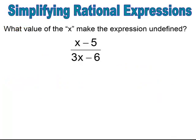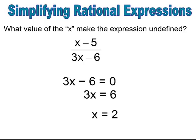Pause and try. In this case, we set it equal to zero, solve for x — add six, then divide through by three. So when x equals two, I would get zero in the denominator. Therefore, this would be the restriction on this rational expression.